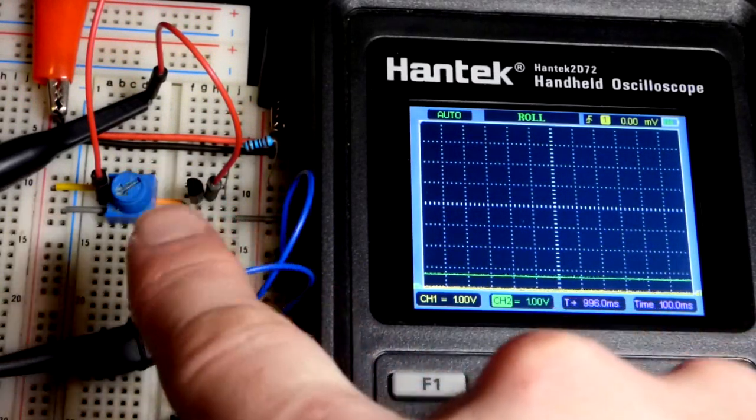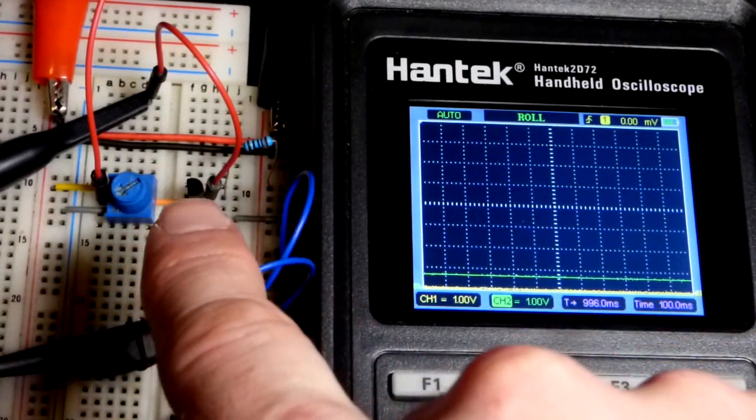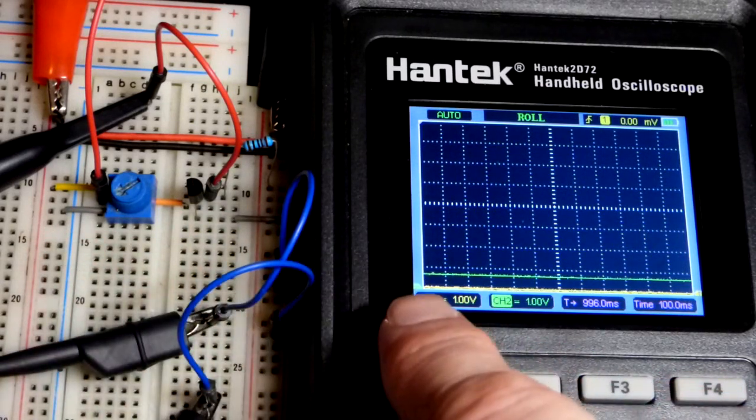So now in this video we're going to look at a PNP bipolar junction transistor wired as an emitter follower.